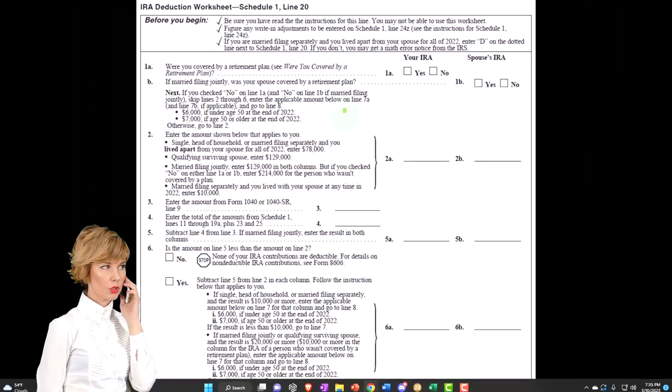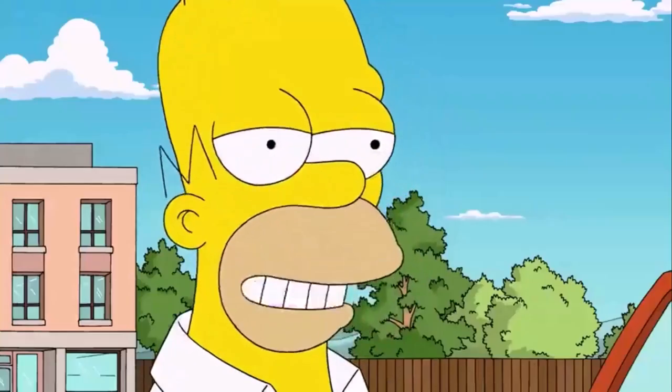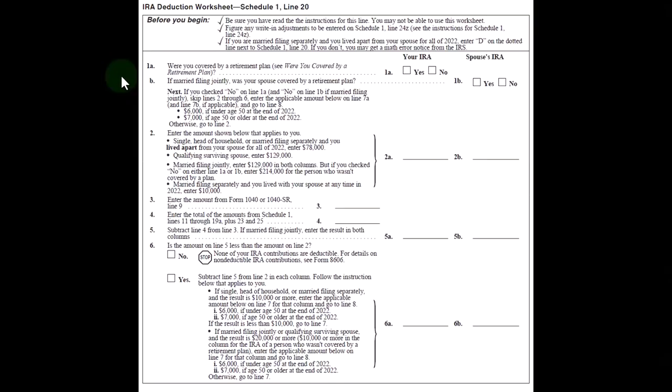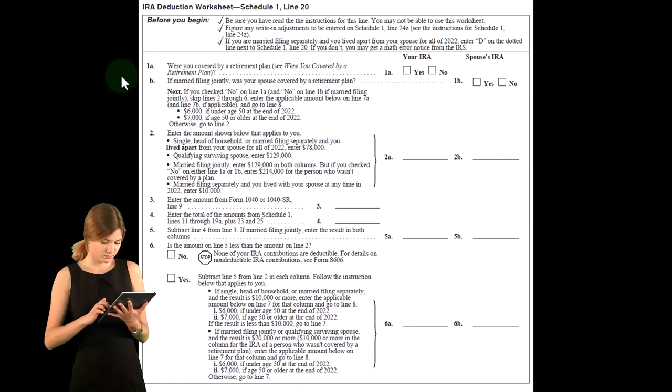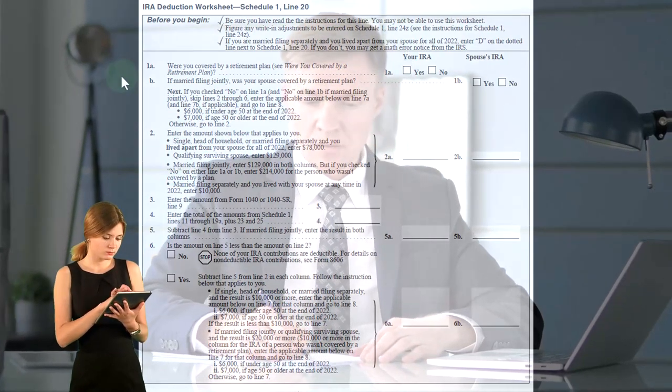So let's take a look at it. Box 1A, were you covered by a retirement plan? My lifestyle is my retirement plan. So notice if they were a single filer, for example, we might have W2 income. And then the question is, did you have access to, say, a 401k or a 403b or something like that?